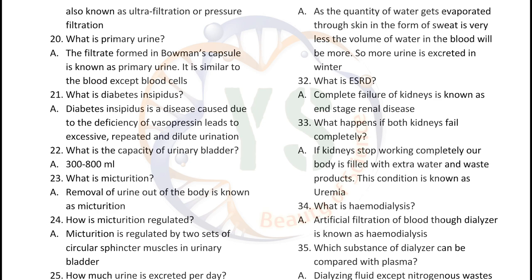What is the capacity of the urinary bladder? 300 to 800 ml. What is micturition? Removal of urine out of the body is known as micturition. How is micturition regulated? Micturition is regulated by two sets of circular sphincter muscles in the urinary bladder.